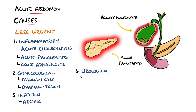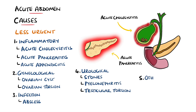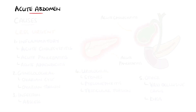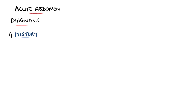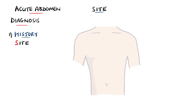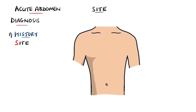There are also urological causes, such as pyelonephritis, renal stones, or testicular torsion. Other causes include a vaso-occlusive crisis in sickle cell disease and diabetic ketoacidosis. In terms of the diagnosis, the clinical history and physical exam will greatly help in narrowing down the possible causes of the acute abdomen. Mnemonics such as SOCRATES are useful in gathering a comprehensive history of the pain.